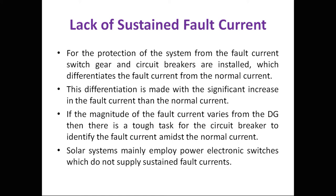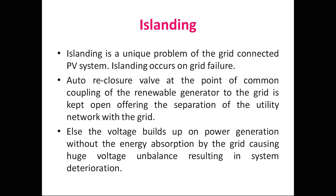Solar systems mainly employ power electronic switches which don't supply a sustained fault current. Power electronics won't give proper current — harmonics cause the active current component to be reduced. This is the core problem with PV systems in terms of lack of sustained fault current protection.